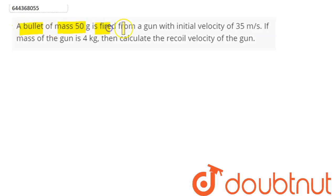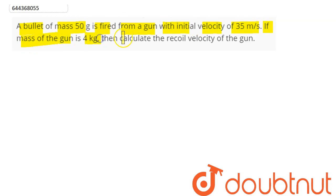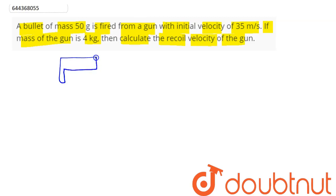The question is: a bullet of mass 50 grams is fired from a gun with a velocity of 35 meters per second. If the mass of the gun is 4 kg, calculate the recoil velocity of the gun.